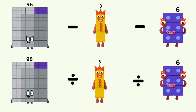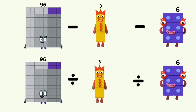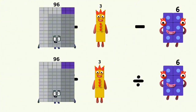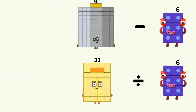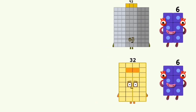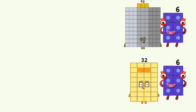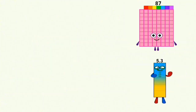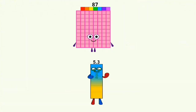96 minus and divided by 3 equals 93 and 32. 93 minus 6 and 32 divided by 6 equals 87 and 5.3.